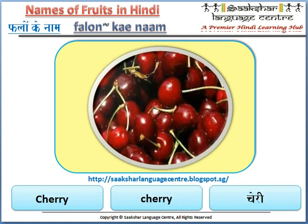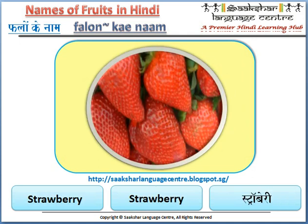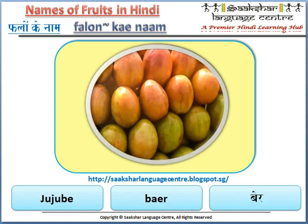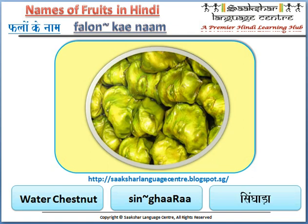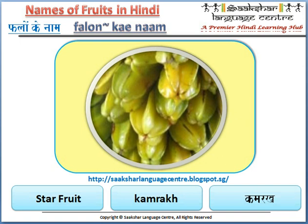Cherry is cherry. Strawberry is strawberry. Jujube is bear. Water chestnut is singhara. Star fruit is kamrak.